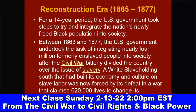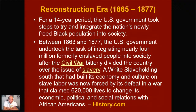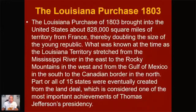Reconstruction, 1865 to 1877, was a 14-year period in which the U.S. government took steps to integrate nearly 4 million formerly enslaved African people into society. Between 1863 and 1877, the government undertook this task after the Civil War bitterly divided the country over slavery. A white slave-holding South that had built its economy and culture on slave labor was forced by its defeat — in a war that claimed 620,000 lives — to change its economic, political, and social relations with African Americans, and they didn't do so willingly.